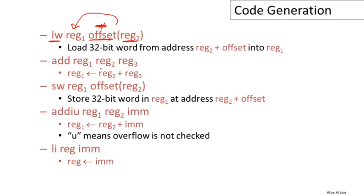The add instruction adds the contents of register two and register three together and stores the result in register one. The store operation or store word operation takes the value in register one and stores it into memory at a memory address. The memory address is the contents of register two plus a fixed offset that's in the code.